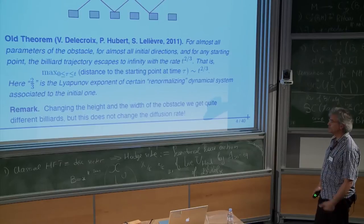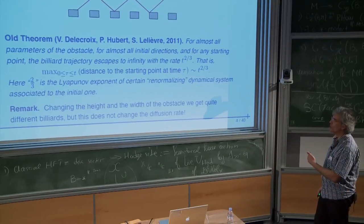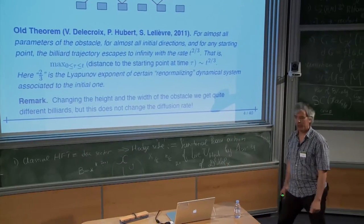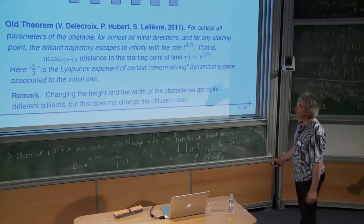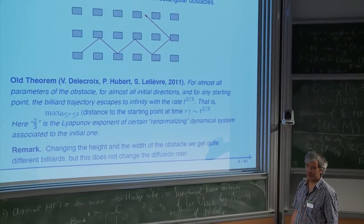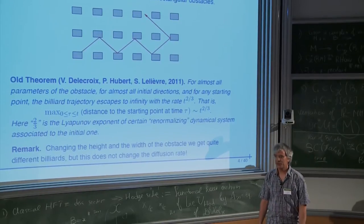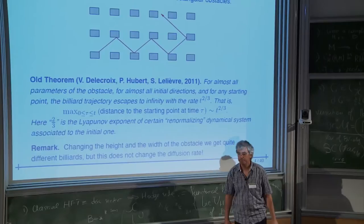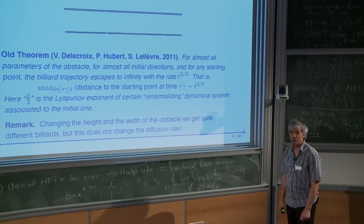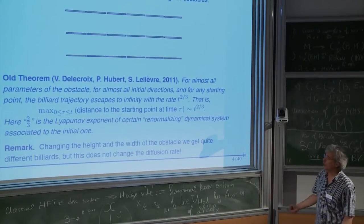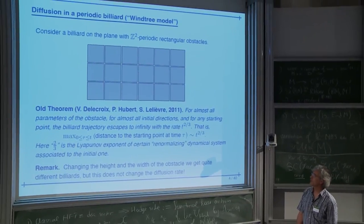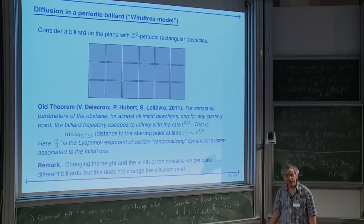Note that this system is not hyperbolic: if you send two trajectories very close to each other, they stay very close for a very long time. The diffusion rate of two-thirds does not change if you change the rectangle — it's still two-thirds for a different rectangle, even for a chocolate-plate shape with very narrow corridors. The goal of the talk is to compute this two-thirds.